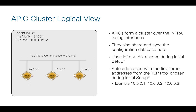If you remember, when you first set up your APIC, you had to answer a series of questions, and you had to choose a dedicated infra VLAN. In this particular example, I chose 3456 — yours might differ. At the same time, your three APICs are going to automatically be assigned an IP address out of the TEP pool that you also choose at initial setup. In my example, I chose the default 10.0.0.16, so APIC 1 will always be .1, APIC 2 will be .2, and APIC 3 will be .3 — always the first three addresses out of your particular TEP pool.